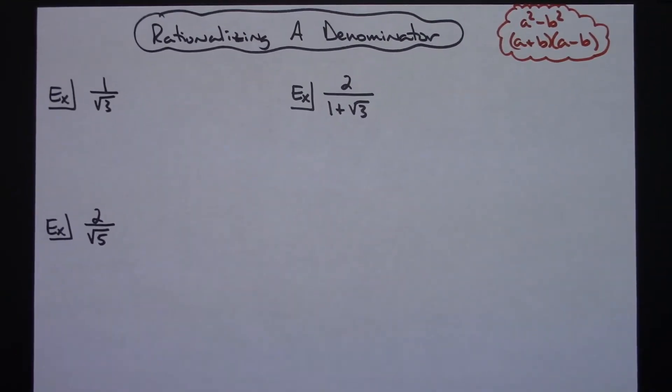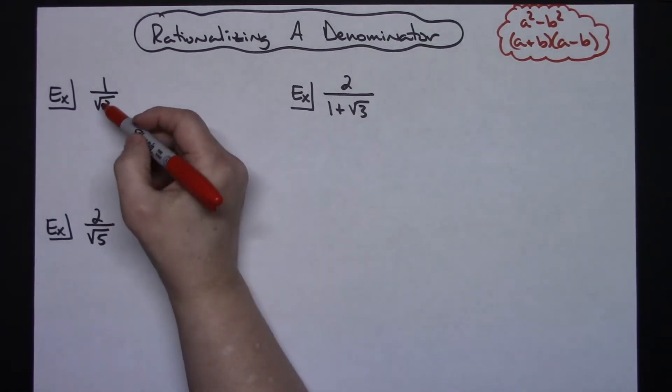In this video I'm going to work out about three examples showing how you would go about rationalizing a denominator. The first two are going to be relatively simple straightforward ones, and then this one's going to involve a conjugate.